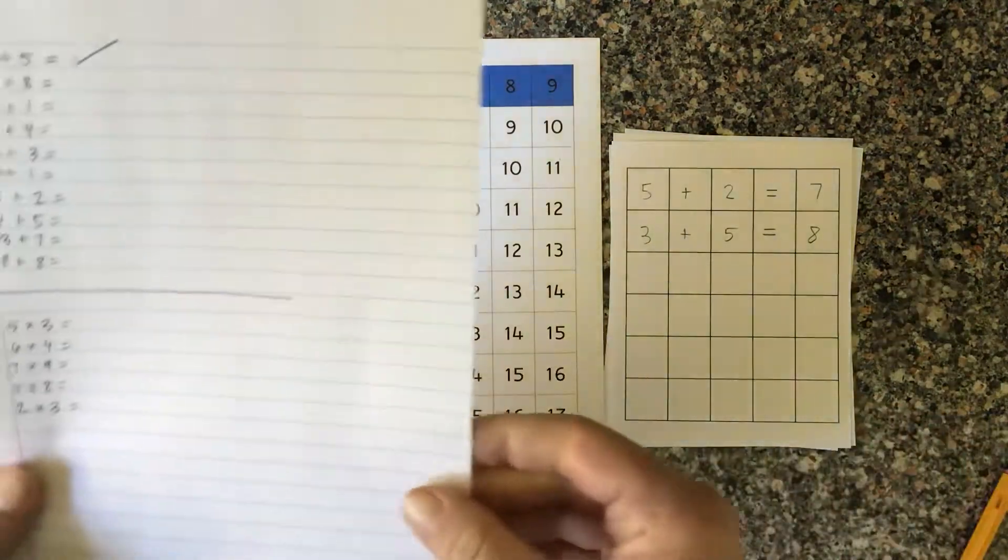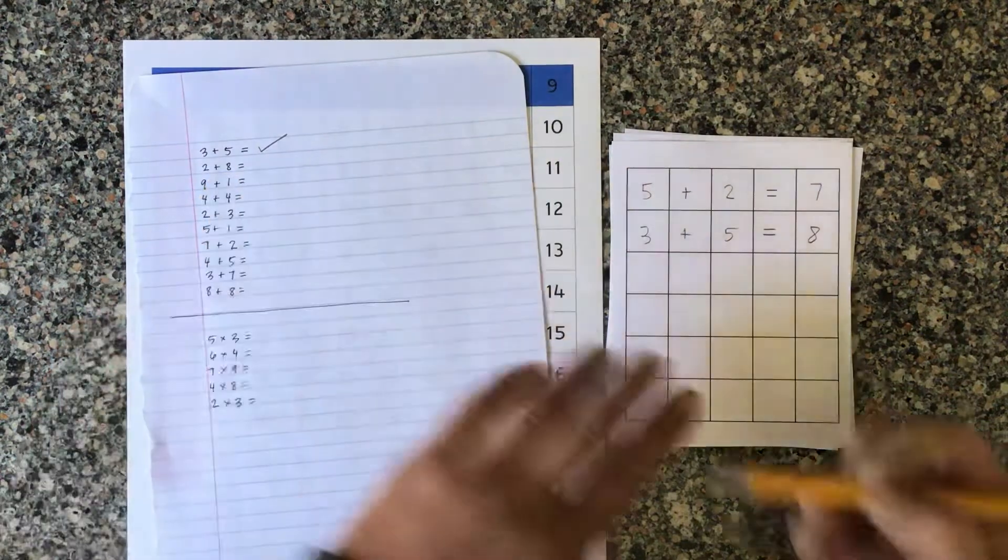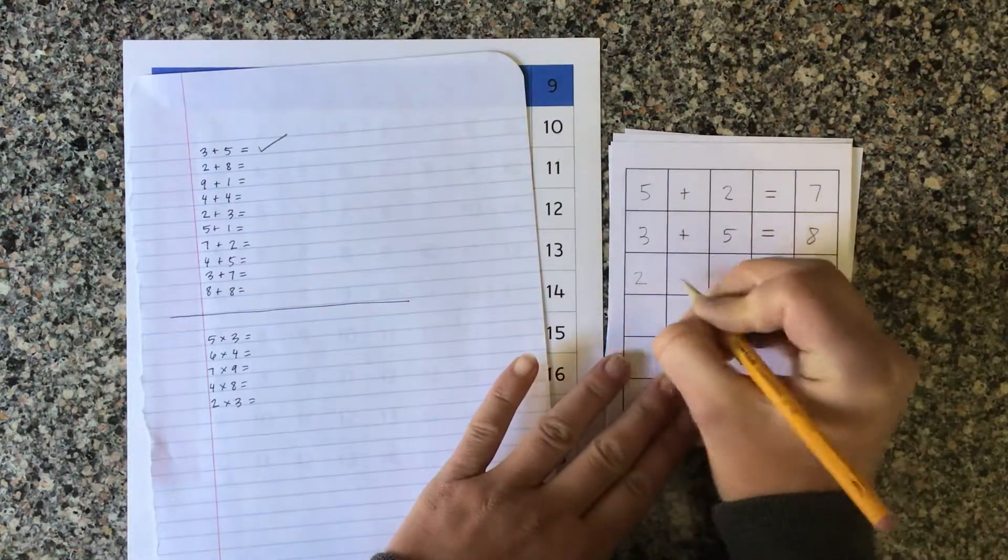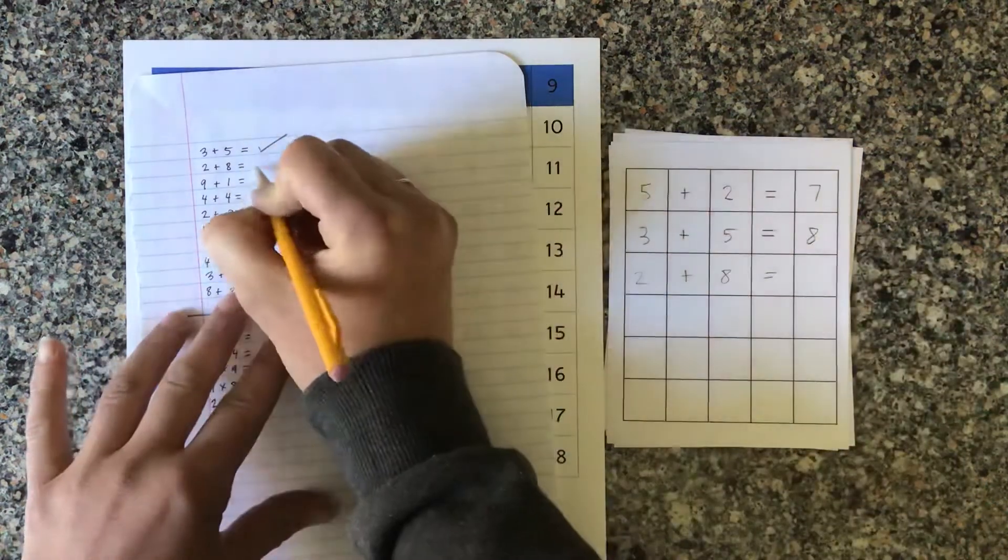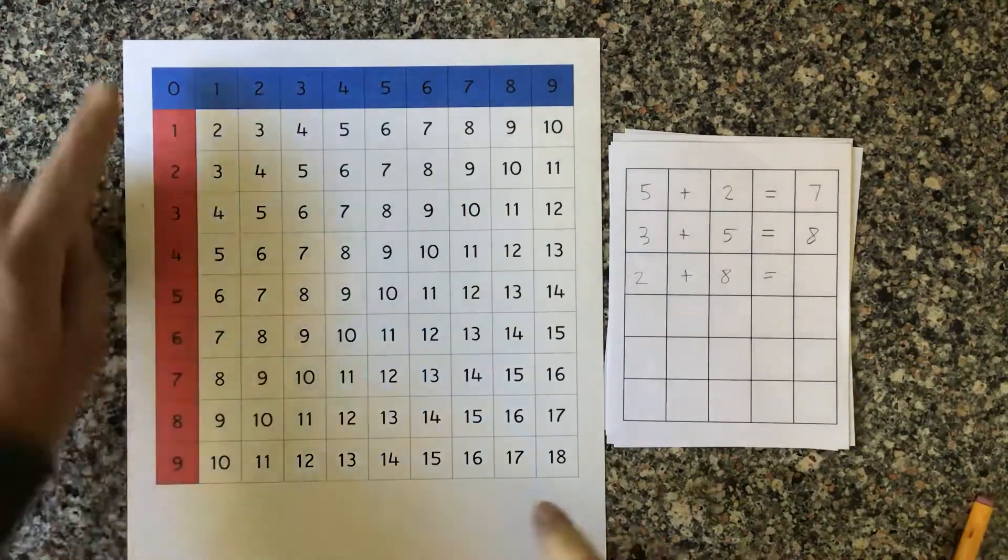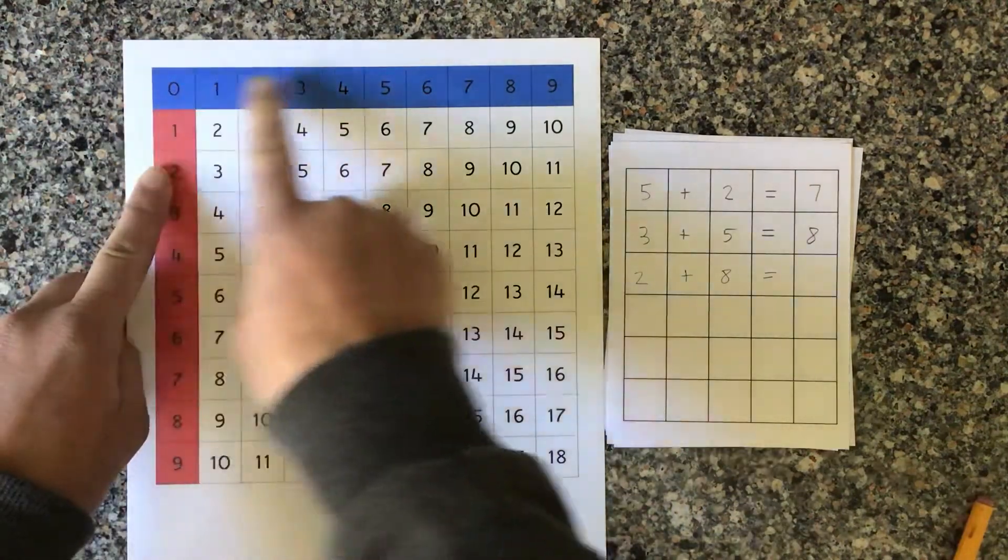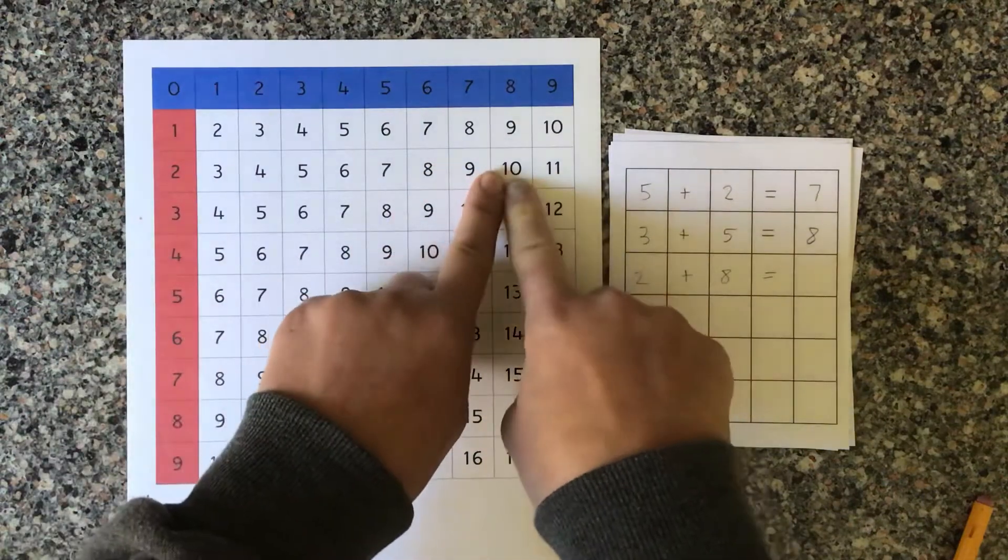We're going to do just one more. 2 plus 8 equals, check. I find 2 plus 8. Our sum is 10.